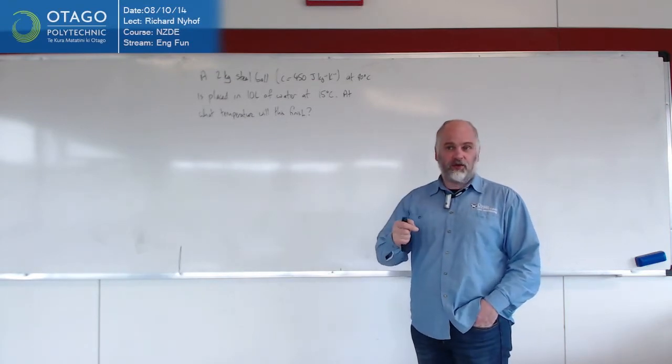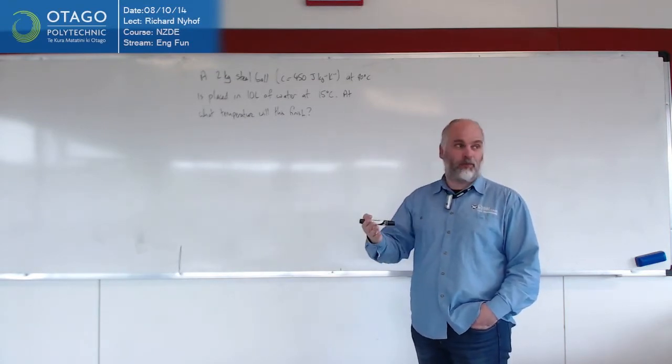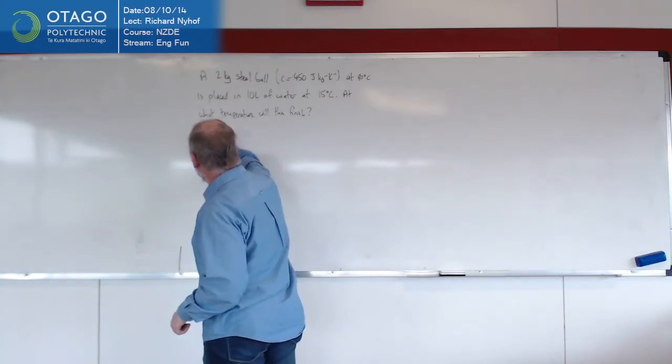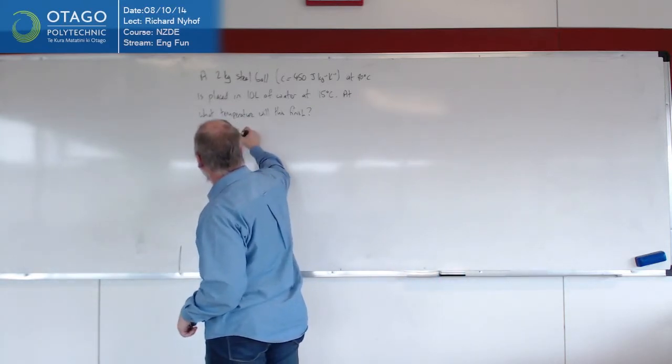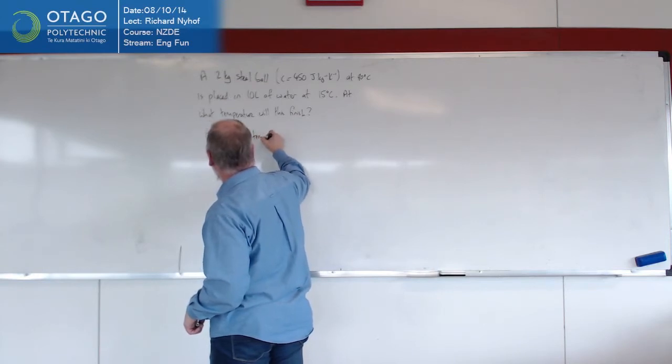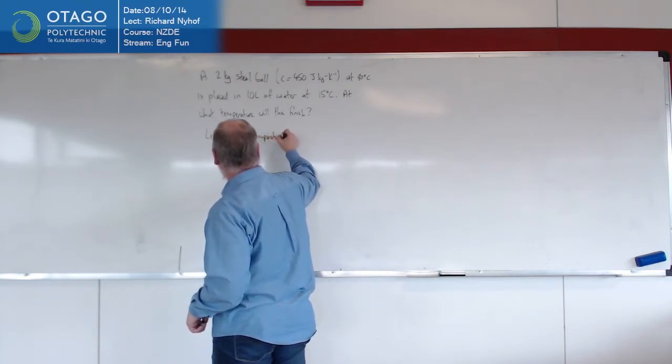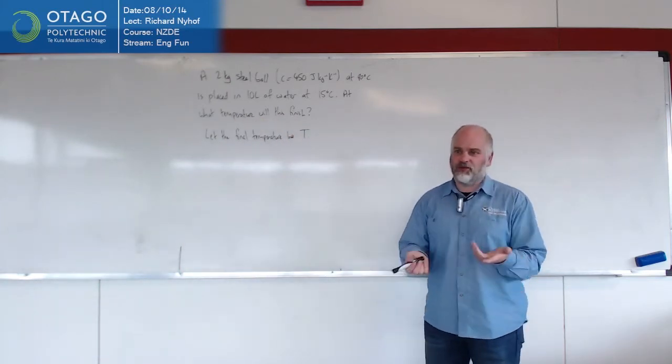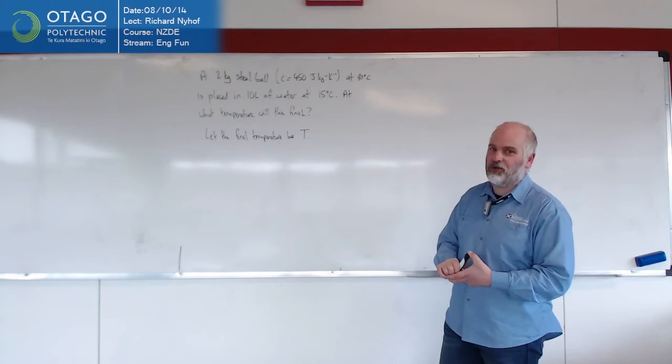And what you need to do here is you need to start with just a symbol for your finish. I'm going to start with saying, let the final temperature be T. So I'm just going to use T for whatever the final temperature is. So Ricky's speculating that T's going to be 45.